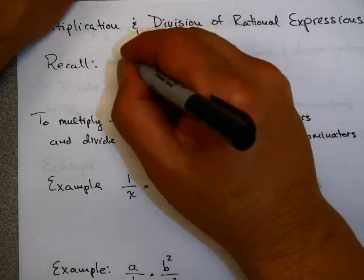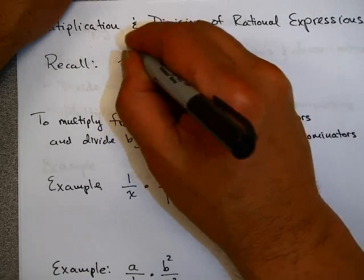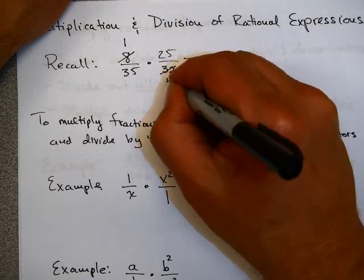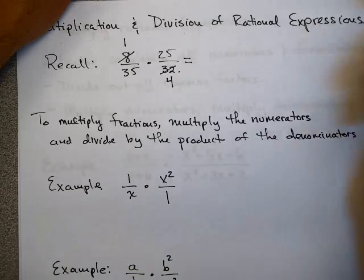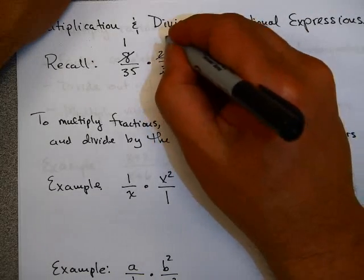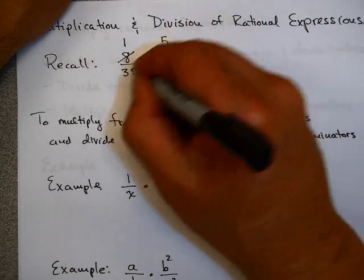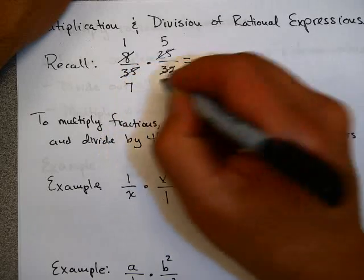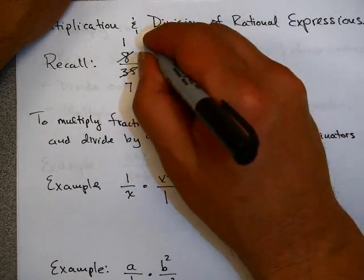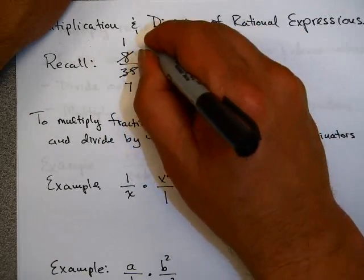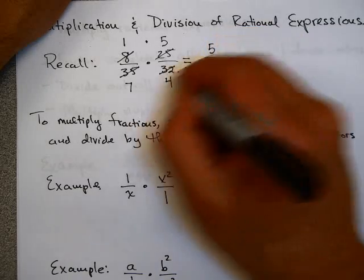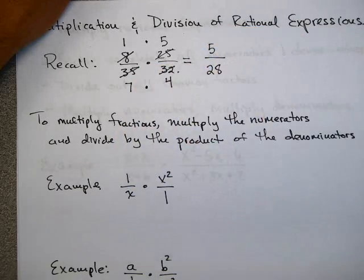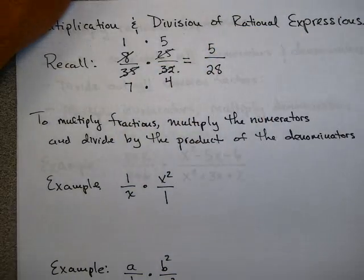One thing you might have done is you might have said: 8 goes into 8 once and into 32 four times. 5 goes into 25 five times and 5 goes into 35 seven times. Then 1 times 5 is 5 and 7 times 4 is 28, and you'd get that as your answer.